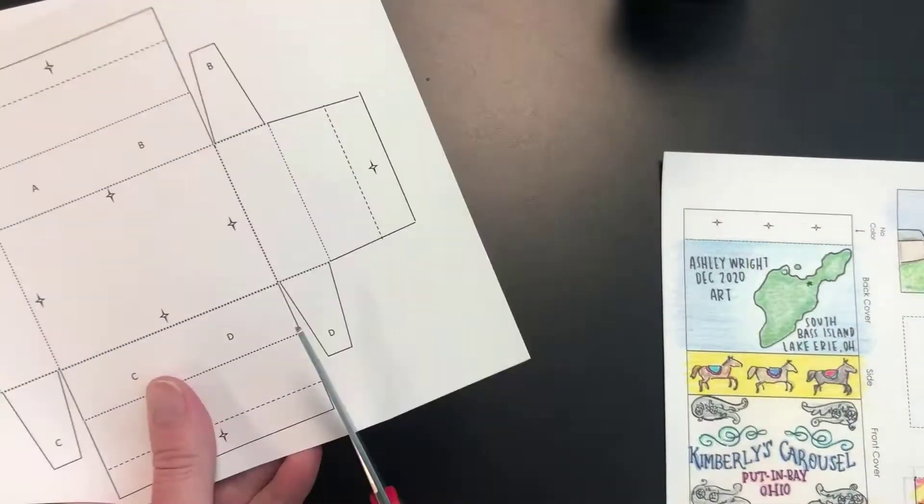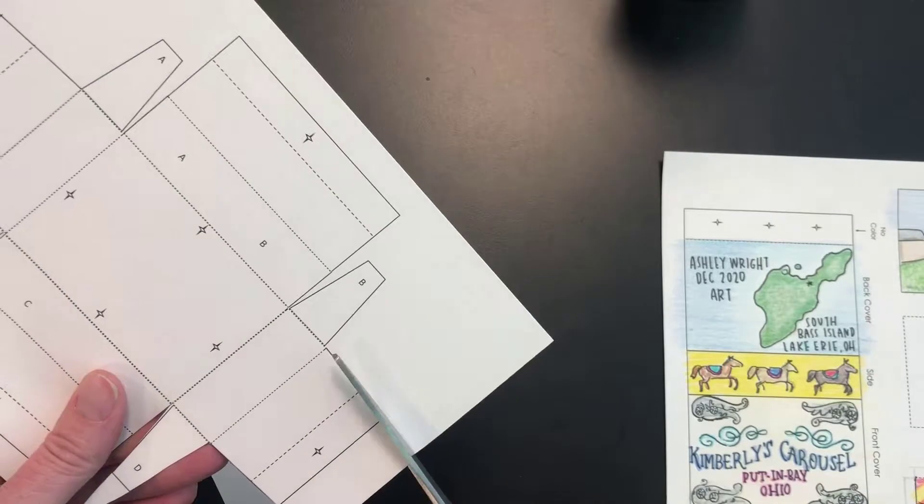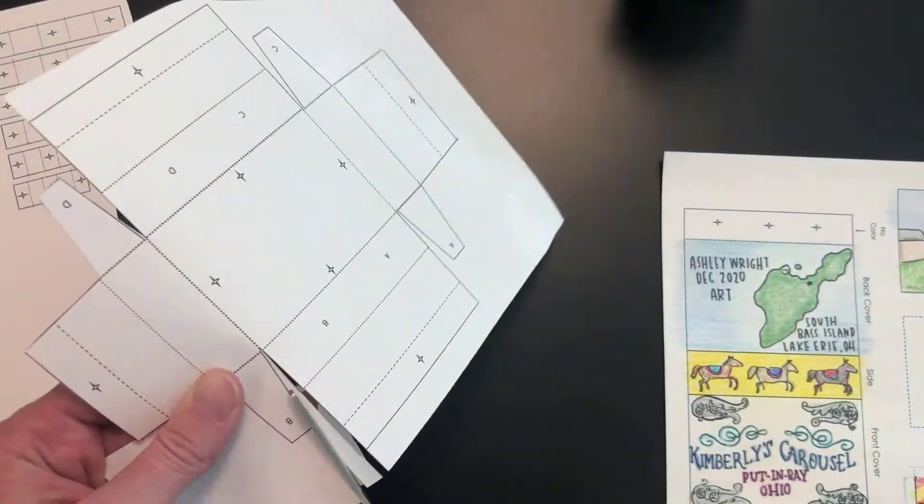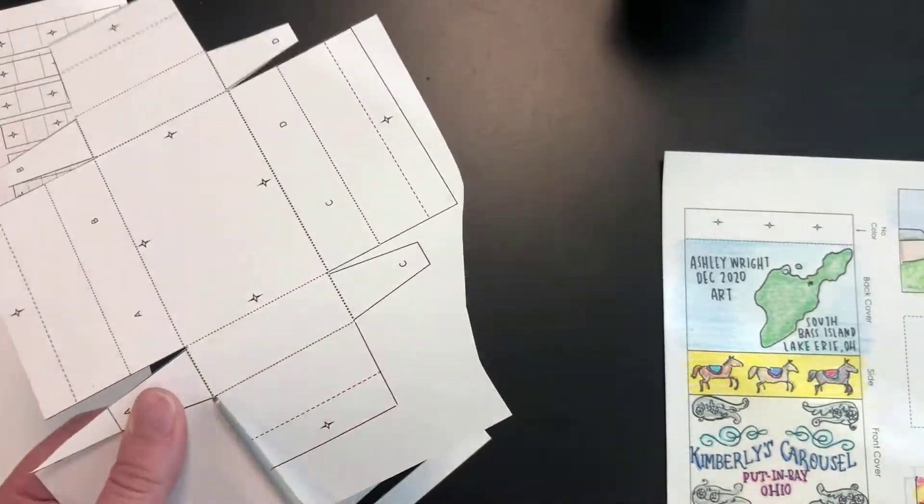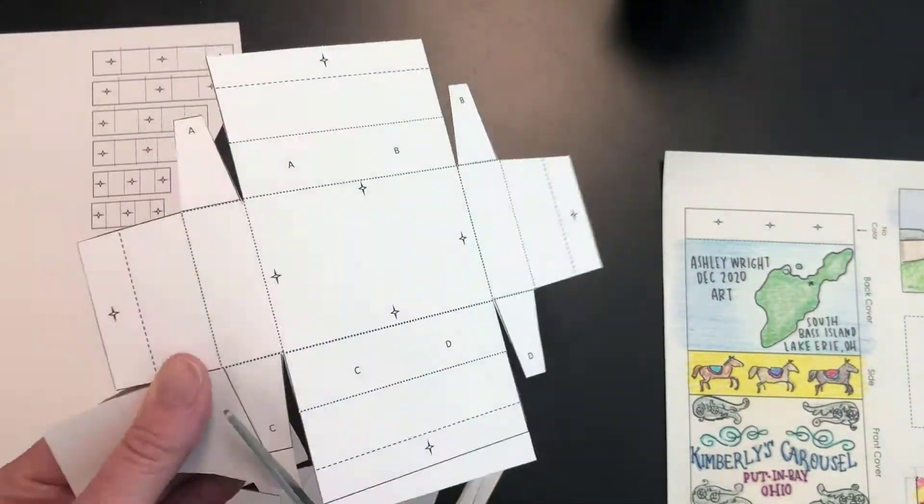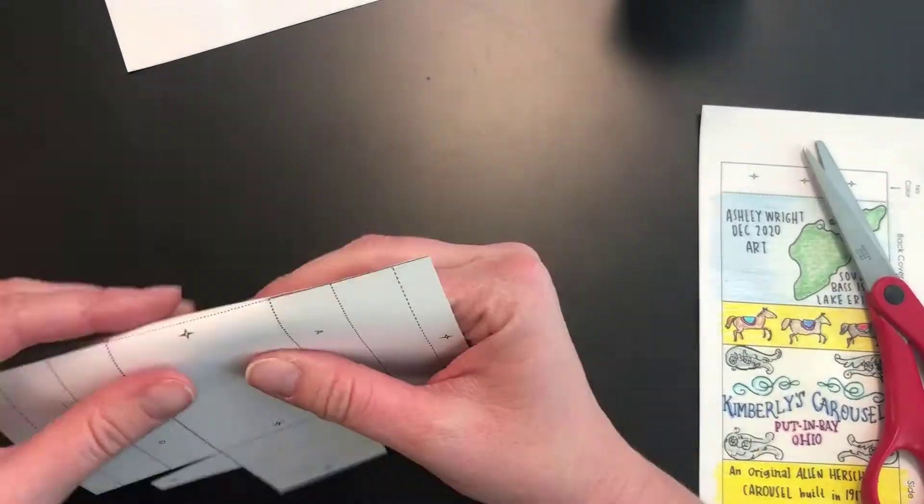I'm going to start by cutting my box template out. I'm going to cut on all the solid lines around the outside edges so that I have the finished template. You can see star tabs, letter tabs, lines that are dotted and dashed. All that's going to make sense when we start to build this thing together.